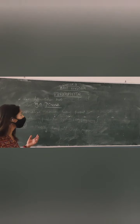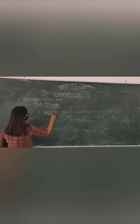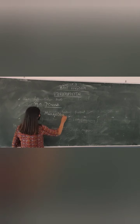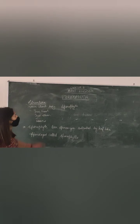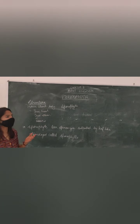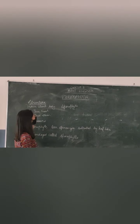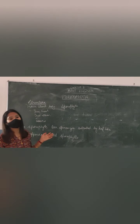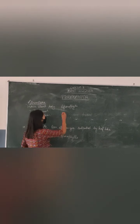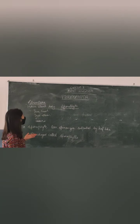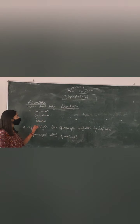Let us talk about the structure of the pteridophytes. Their main plant body is the sporophyte. As I said, in bryophytes the plants were non-vascular and had alternation of generations where the dominant phase was the gametophyte. But in pteridophytes, the main plant body is the sporophyte. So the plant which we actually see has roots, stems, and leaves.